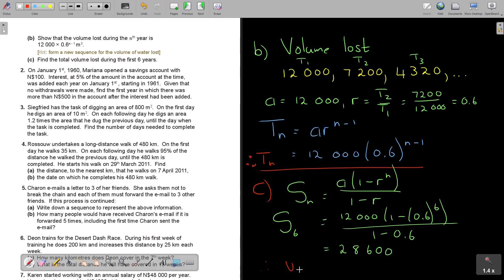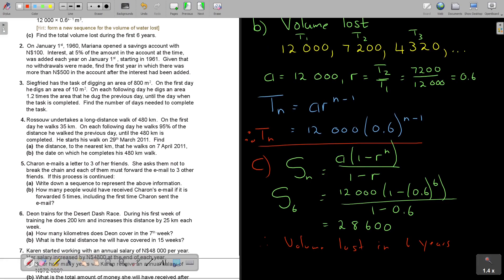So therefore, that should have been S6, so therefore the volume lost in 6 years is 28,600, and I can say this is correct to 3 significant figures. And that's how you do it. You could have also, and I just want to show you, you could have continued this pattern until you get to 6 and then just add it up. That would have also gave you the same answer.